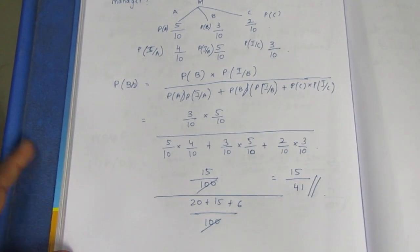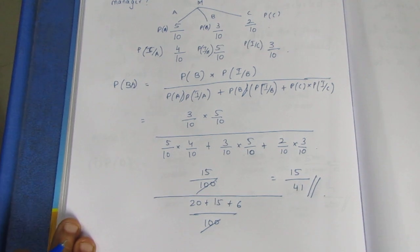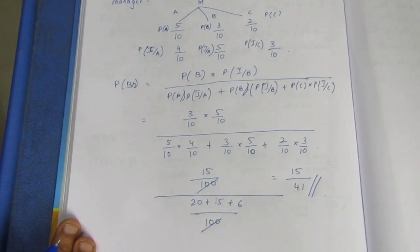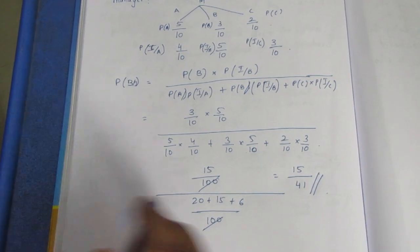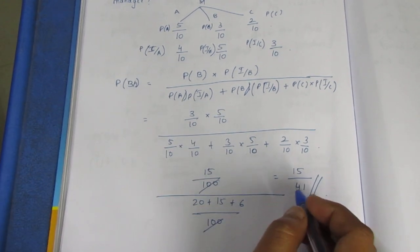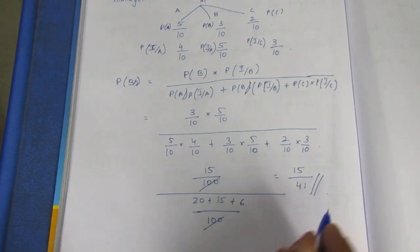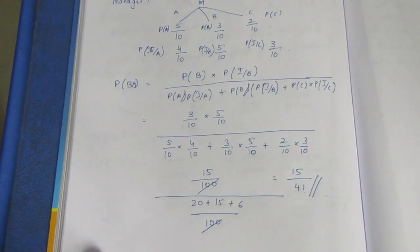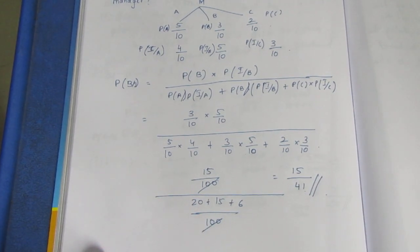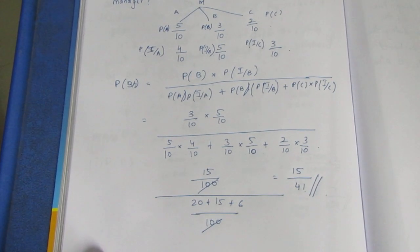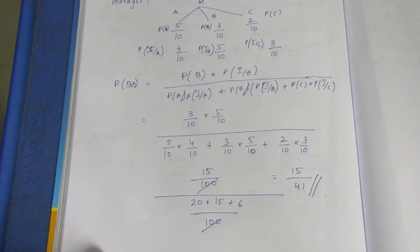So this is the probability. If the office canteen has been improved, what is the probability that B was appointed as the manager? The answer is 15 by 41. That is the sum. Thank you.